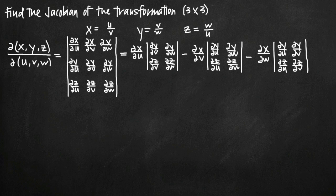Today we're going to be talking about how to find the Jacobian of the transformation. In this particular problem, we've been given the equations x equals u divided by v, y equals v divided by w, and z equals w divided by u, and we've been asked to find the Jacobian of the transformation.